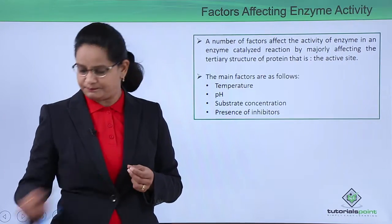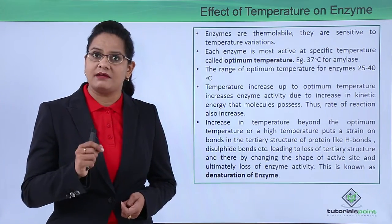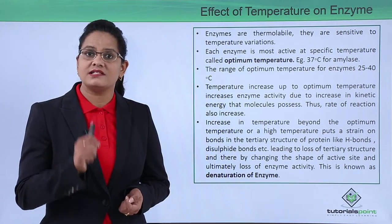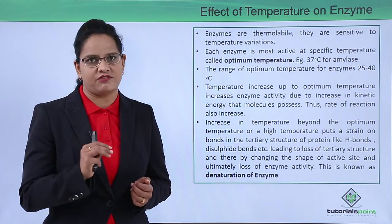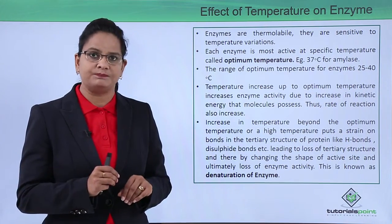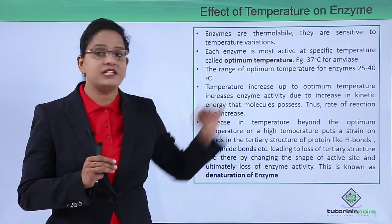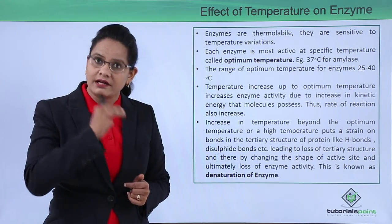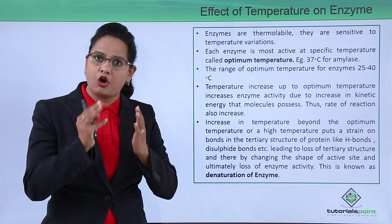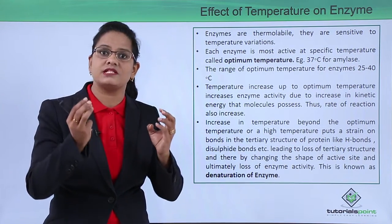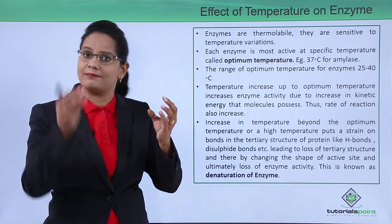The effect of temperature on the activity of an enzyme: enzymes, and proteins in general, are thermolabile, meaning they are very sensitive to temperature variations. Each enzyme has a specific temperature at which it works most efficiently, known as the optimum temperature. For amylase, it is around 37 degrees Celsius. The range of optimum temperature for enzymes is 25 to 40 degrees Celsius. As temperature increases, according to collision theory, more enzymes and substrates collide, so enzyme activity increases.